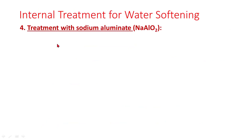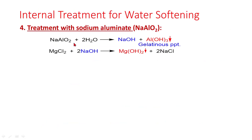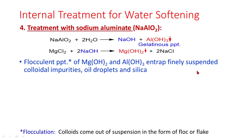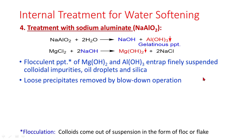Treatment with sodium aluminate: sodium aluminate with water gives rise to sodium hydroxide and a gelatinous precipitate of aluminum hydroxide. This sodium hydroxide can further react with magnesium hardness to give magnesium hydroxide. Magnesium hydroxide and aluminum hydroxide precipitates are gelatinous; they entrap finely suspended colloidal impurities, oil droplets, and silica. Loose precipitates are removed by blowdown operation.